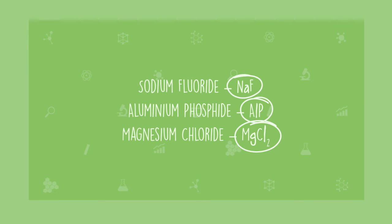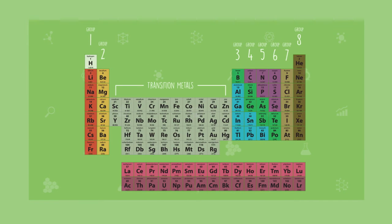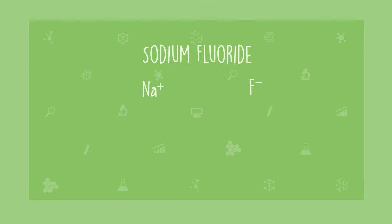Let's review what we know about ions and ionic compounds. Because sodium is in group one of the periodic table, we know it wants to form a cation with a charge of plus one. And because fluorine is in group seven, we know it wants to form an anion with a charge of minus one. Compounds always have a neutral charge.